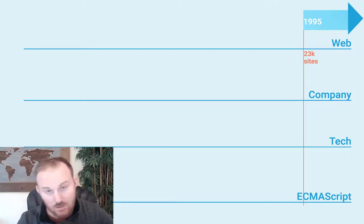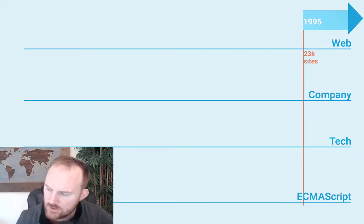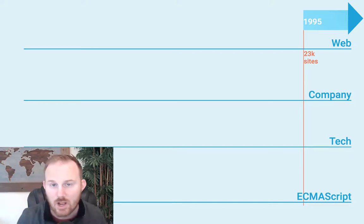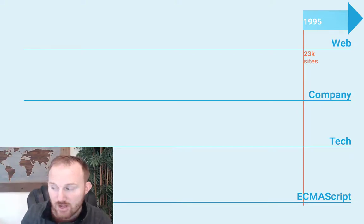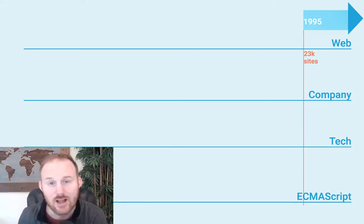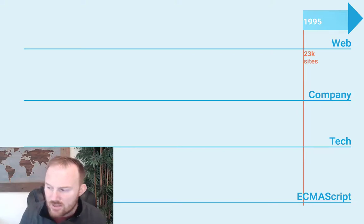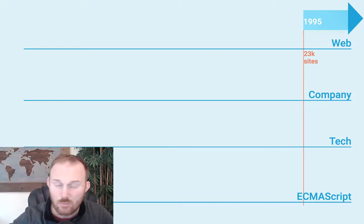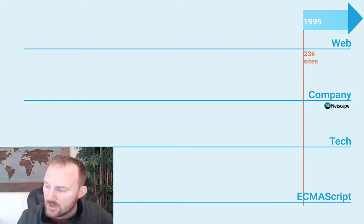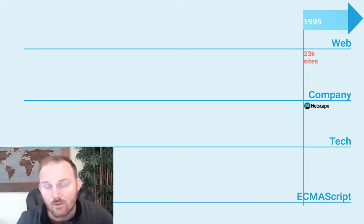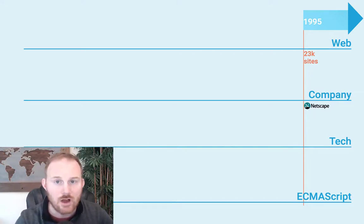1995 is an absolute bombshell of a year for the web. There are 23,000 websites. Windows 95 is released. The web is gaining traction, but there still aren't a lot of people with modems — not a lot of access. The web is still in that infancy phase, because a couple years ago it didn't even exist. Netscape is founded and comes out with Navigator, which is the first major browser.